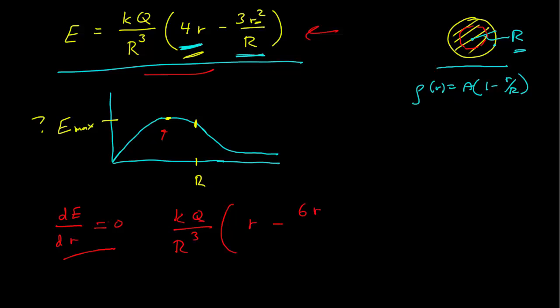R, then minus 6, sorry, R, 4, minus 6R over capital R, then is equal to 0.